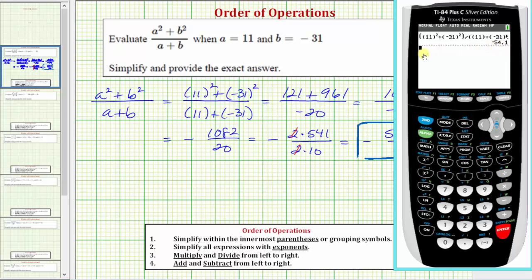To see this value as a simplified fraction, we press math, enter, enter. And we have negative 541 tenths, which verifies our work is correct.